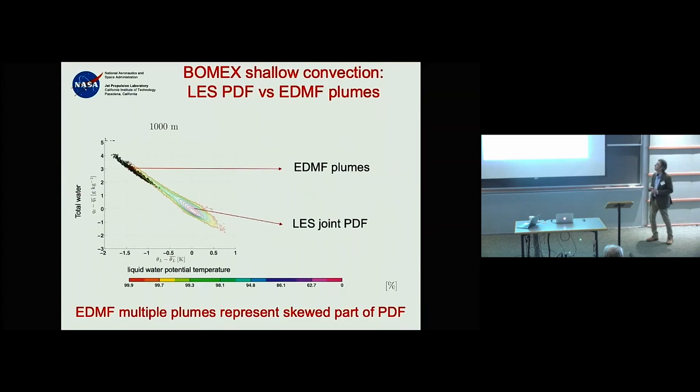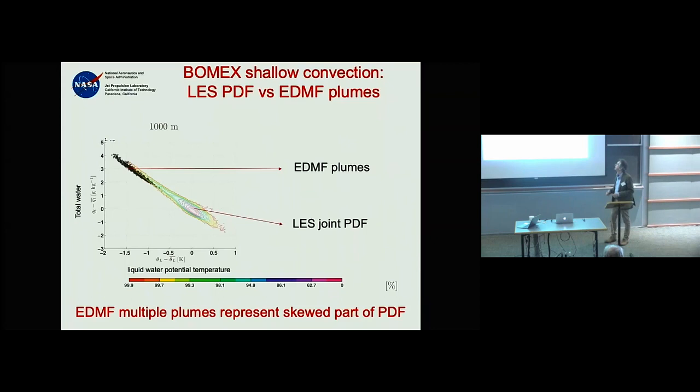This can be seen in the joint PDF diagram: at about 1000 m above the surface in the middle of the convective layer, the LES shows the joint PDF of liquid water potential temperature minus the mean and total water minus the mean.